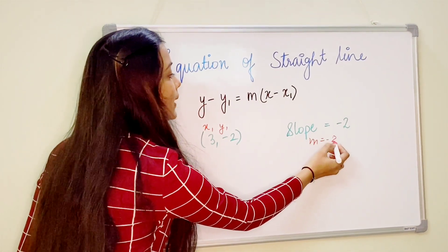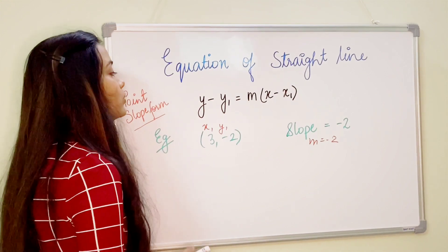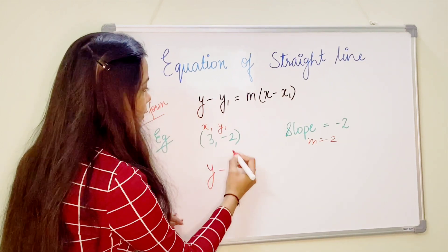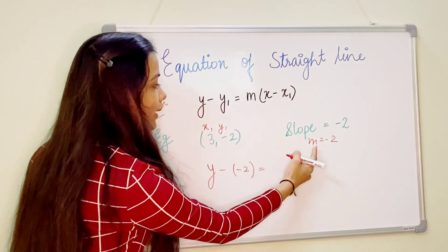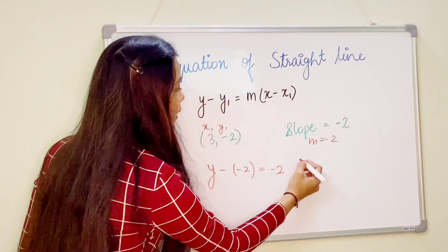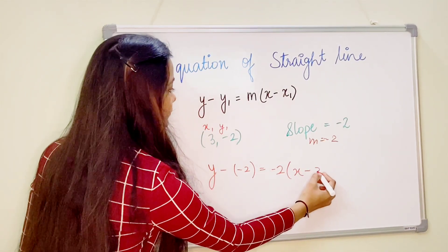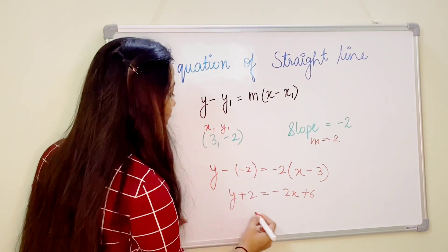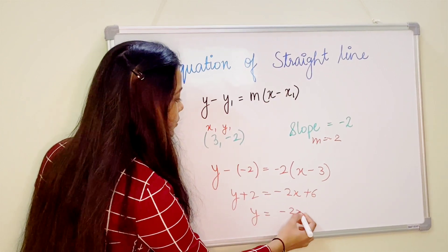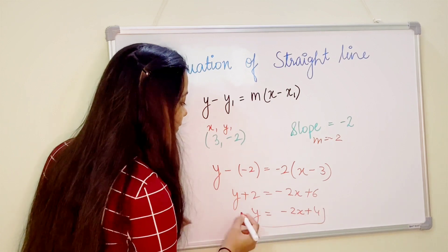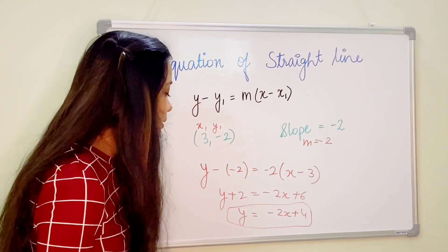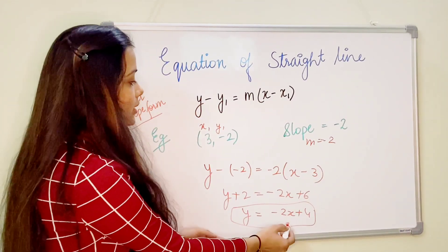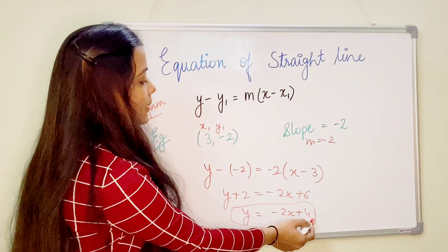So m is equal to minus 2, and using these values we find the equation of the straight line. Substituting, we get y minus y1 equals m times x minus x1, which gives us y plus 2 equals minus 2x plus 6. Shifting terms, this becomes y equals minus 2x plus 4. The slope is minus 2 and the intercept is 4.